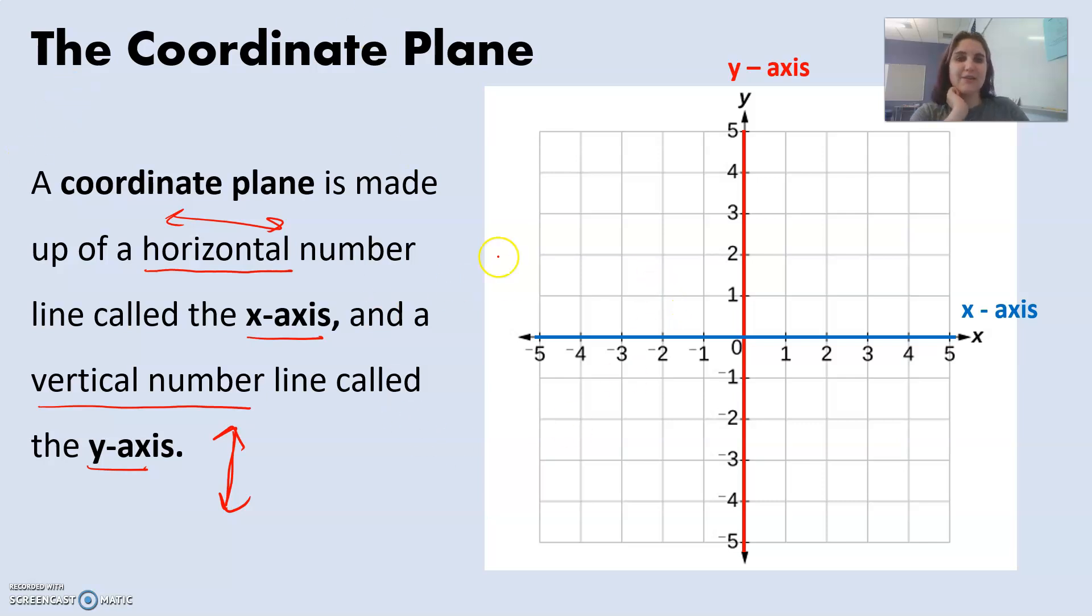So you'll notice we have positive values, we have negative values, we've got negatives over here, we've got negatives down here, we've got positive values here, positive values up here. So we're going to talk about how all of those come into play with our coordinate plane.